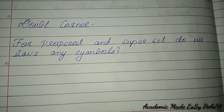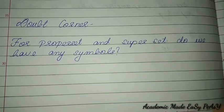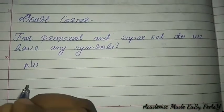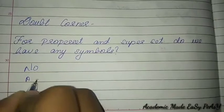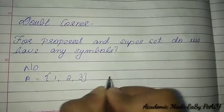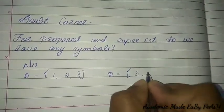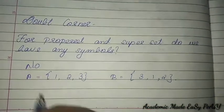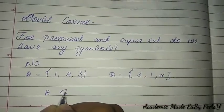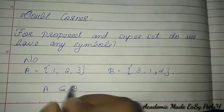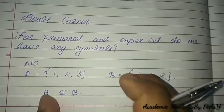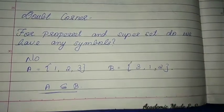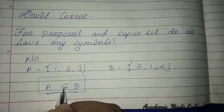From the comment box, one of you asked: is there any symbol for proper subset and superset? There is no symbol for proper subset and superset. Instead, there is a symbol used when two sets are equal — for example, if A = {1,2,3} and B = {3,1,2}, these two sets are equal. We can say A is a subset or equal to B. There is a special symbol for this — it means it can be either a subset or an equal set.